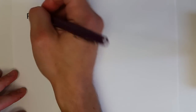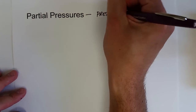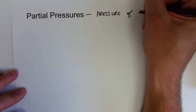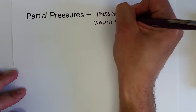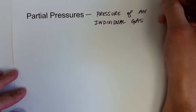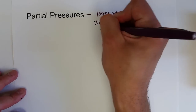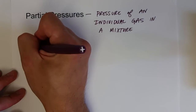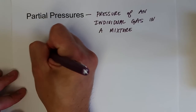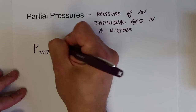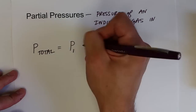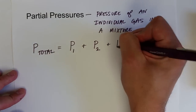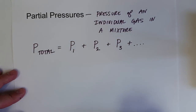One additional aspect of gases that we should talk about is partial pressures. A partial pressure is the pressure of an individual gas in a mixture. Each gas has its own pressure, and the sum of the individual gases equals the total pressure. The total pressure of a mixture of gases is equal to the partial pressure of the first gas plus the partial pressure of the second gas plus the partial pressure of the third, plus however many gases are in that sample.